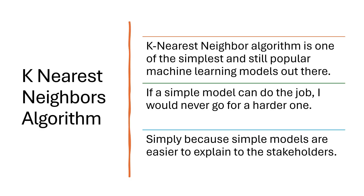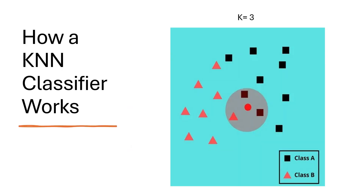K-Nearest Neighbors algorithm is one of the simplest and still popular machine learning models out there. There are lots of more complicated and sophisticated models, but if a simple model can do the job, I would never go for a harder one. The reason it's still popular is it's easy to use and easy to explain to stakeholders. Let's see how a KNN classifier works.